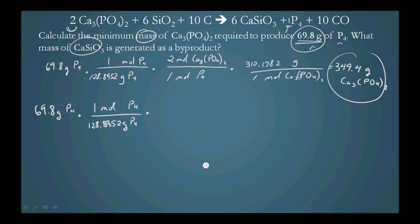We can naturally use our stoichiometric conversions using the chemical equation coefficients. So for 1 mole of P4, we produce, for every 1 mole of P4, we produce 6 moles of CaSiO3.